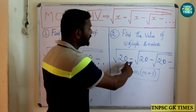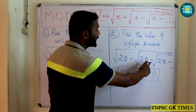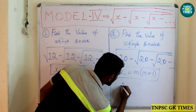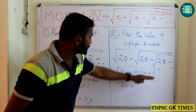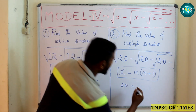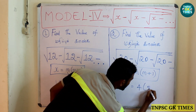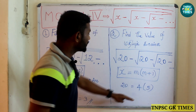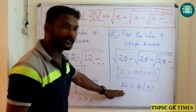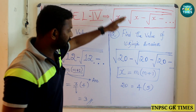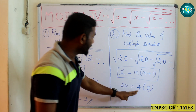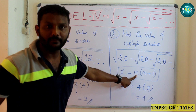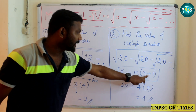Another example: square root of 20 minus square root of 20, up to terms — x = 20. We find two consecutive terms whose product is 20: 4 × 5 = 20, so m = 4 and m + 1 = 5. Since this is subtraction, the answer is m = 4. To summarize: addition gives m + 1 as the answer, and subtraction gives m as the answer.